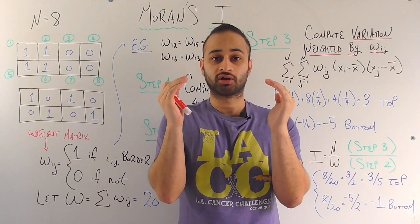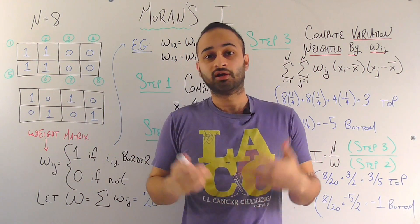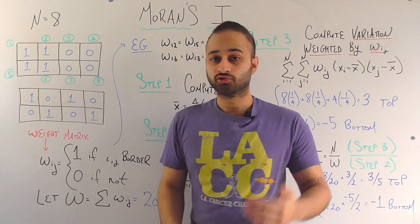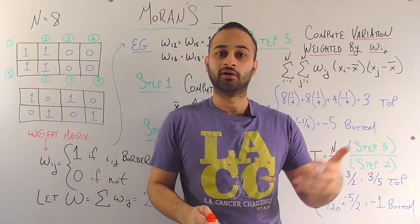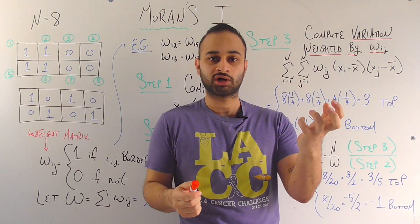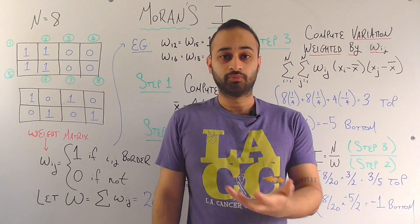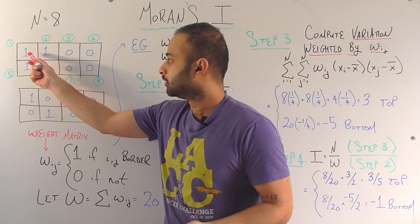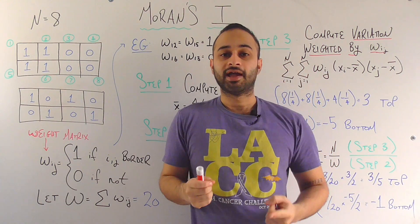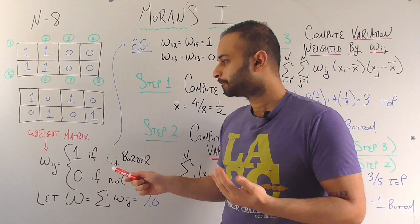Geography 1 and 3 don't border each other, so they get a weight of 0. Geography 1 and 5 do border each other spatially, so that gets a weight of 1. This weight matrix completely tells the story of the connection strength between one geography and any other. The weight matrix I've chosen here is simple: if two states share a horizontal or vertical border, the weight is 1; if not, the weight is 0.